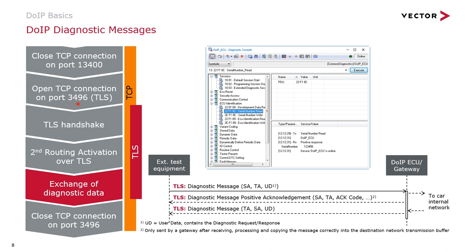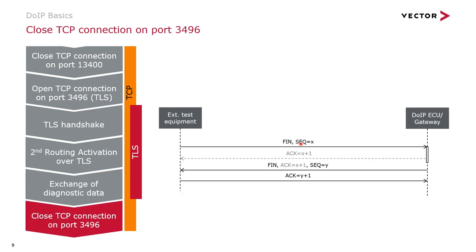For the user of the diagnostic windows, this communication is completely transparent. He can see the unencrypted result, like here the serial number in the diagnostics console. If the tester has finished the diagnostic sequence, it typically will also close the TCP channel afterwards using a standard TCP teardown sequence for the TLS connection on port 3496.